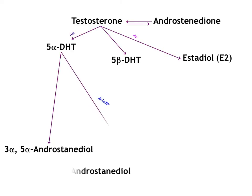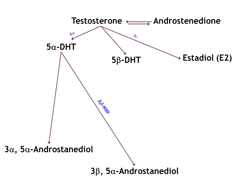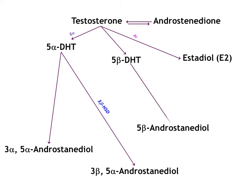Aromatase can produce estradiol. Via 3-beta HSD we can make 3-beta 5-alpha androstenediol. And as you can see, 5-beta androstenediol can be produced from 5-beta DHT.